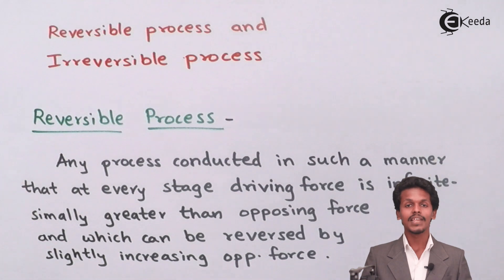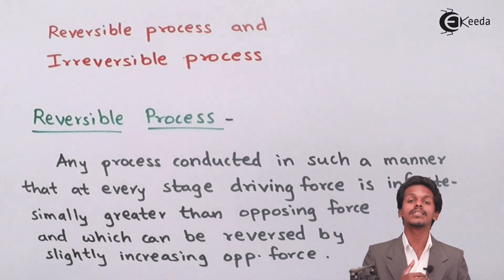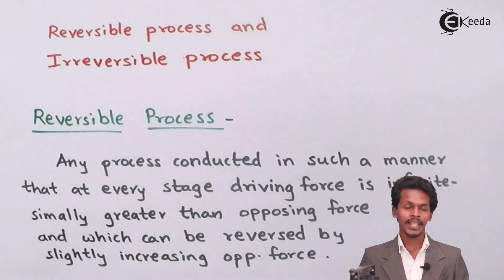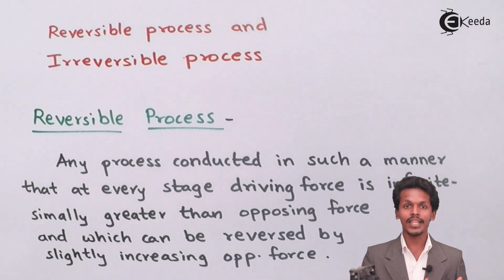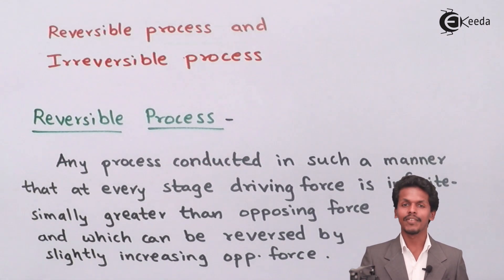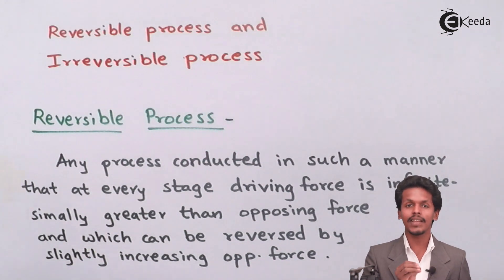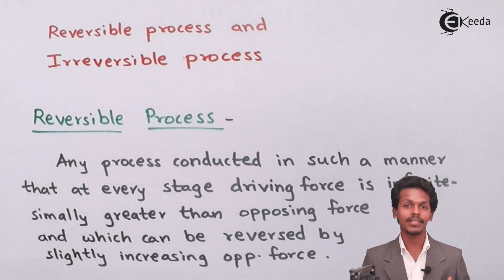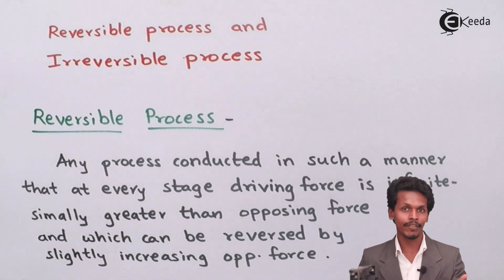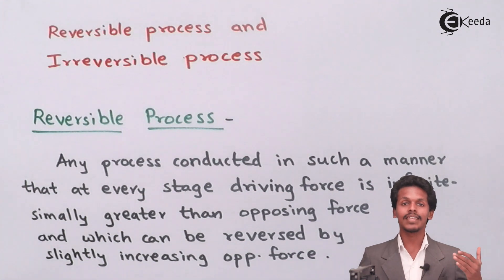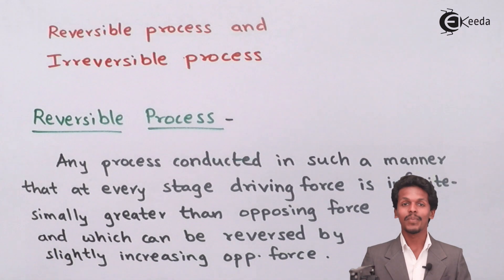Such processes are delicate in terms of the driving force and opposing force. We could reverse the process — suppose A + B gives C + D. The driving force is converting A + B to C + D, and the opposing force is almost equal to the driving force, but infinitesimally smaller. So if I increase a slight force for the opposing force, then the opposing force becomes slightly greater than the driving force, and we get C + D giving A + B, which is the reverse reaction.